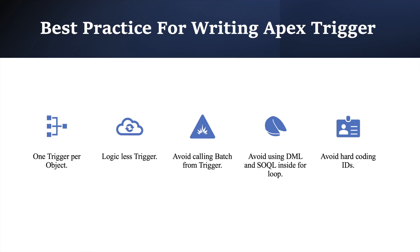Triggers are powerful tools that can do many things when used correctly, but cause a lot of headaches when used incorrectly. There could be many problems like a high possibility of recursion, slow processing due to badly written code, and more. There are some best practices to follow. First is one trigger per object — always prefer to have one trigger per object. With multiple triggers, you do not have control over the execution order, so always try to have one trigger on one object.